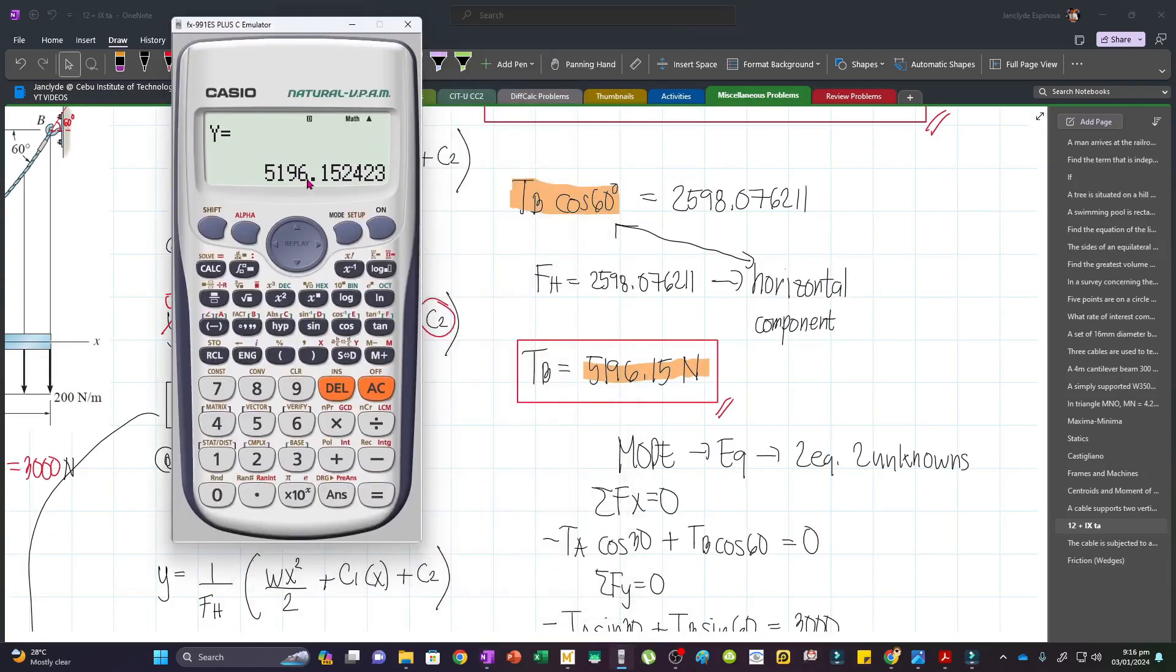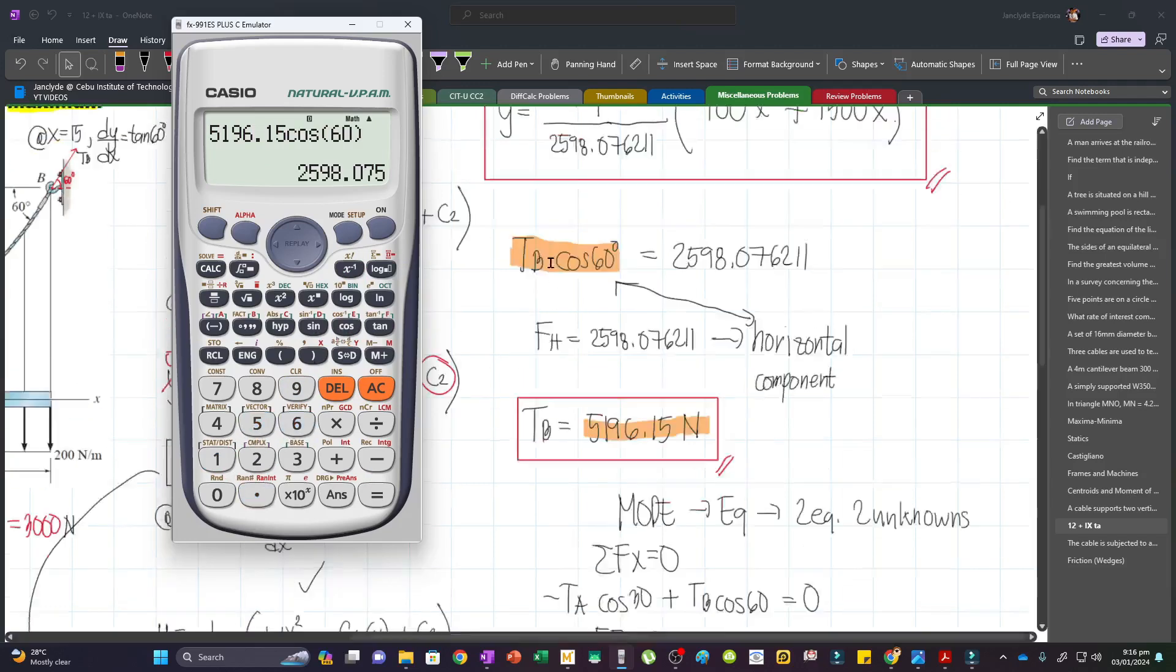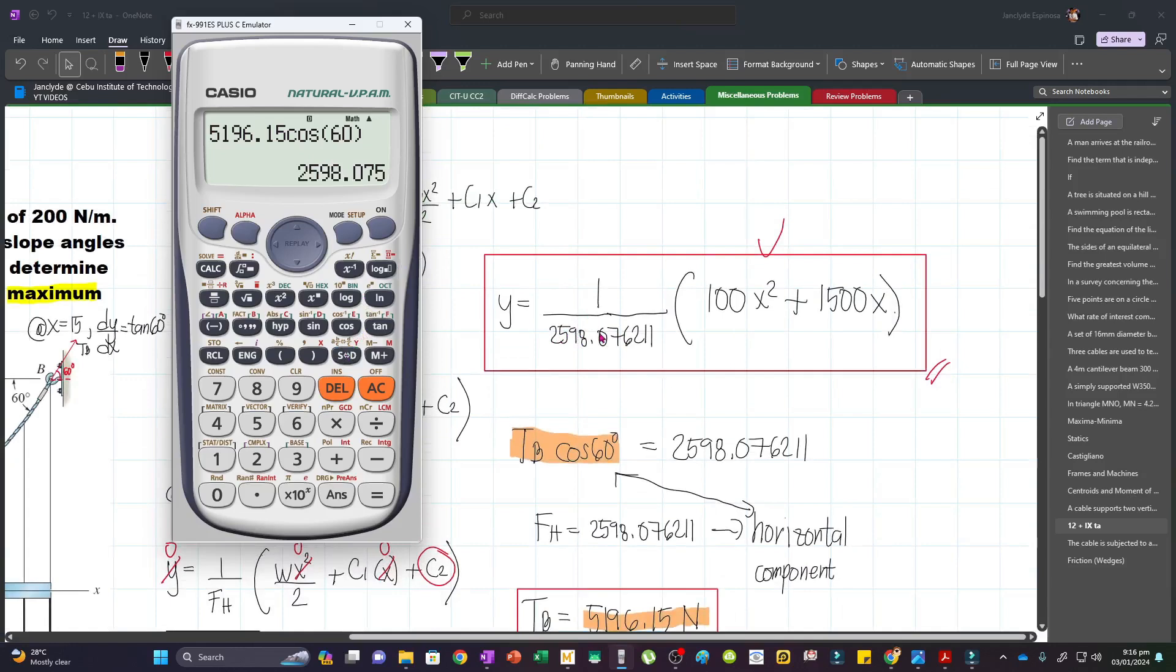So we have this value, 5196.15, and then cosine 60. And so we will be able to get this value, or FH.